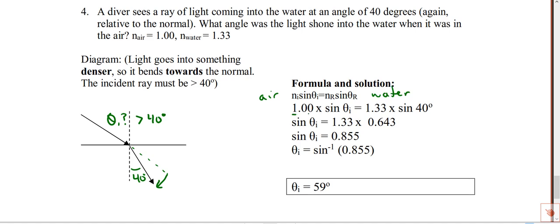It's coming from air, so your index is 1.00. It's going into water. So the index of refraction for water is 1.33. Sine of 40 degrees, so we figured out that it's bending into the water at 40 degrees.